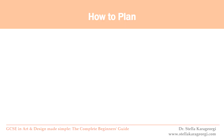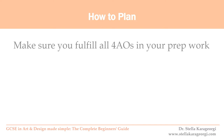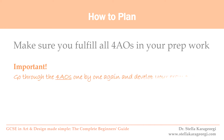Once you get your exam paper, how do you plan for your final exam? You only have four months to work on your exam theme from January until May, so time is limited. You're going to be busy with your other subjects too, and if you're not organized you might jeopardize your 40% marks. First of all, you need to make sure that you fulfill all four assessment objectives in your prep work. As soon as you receive your exam paper, go through the four AOs one by one and develop your exam prep work accordingly in a new sketchbook.